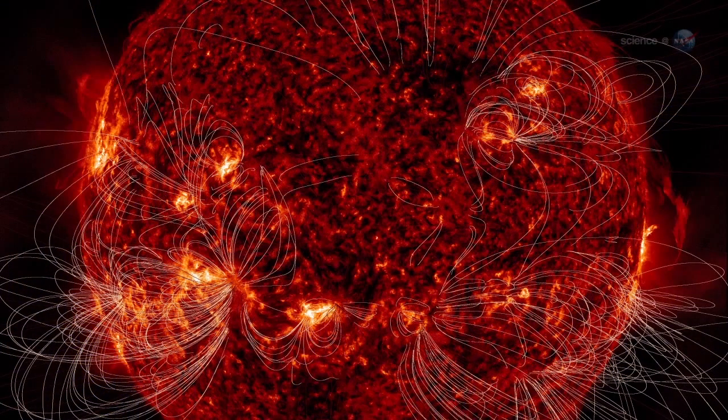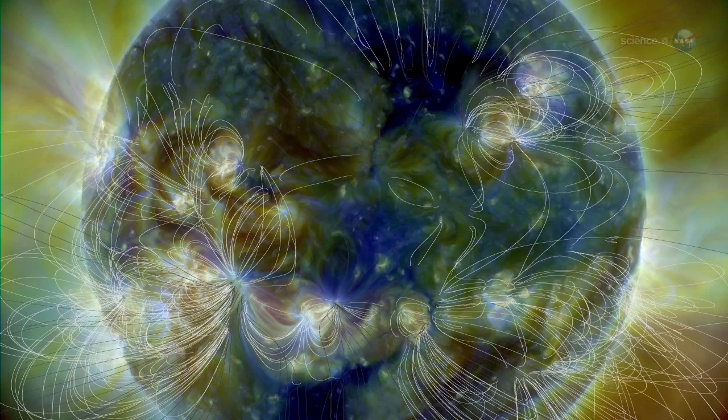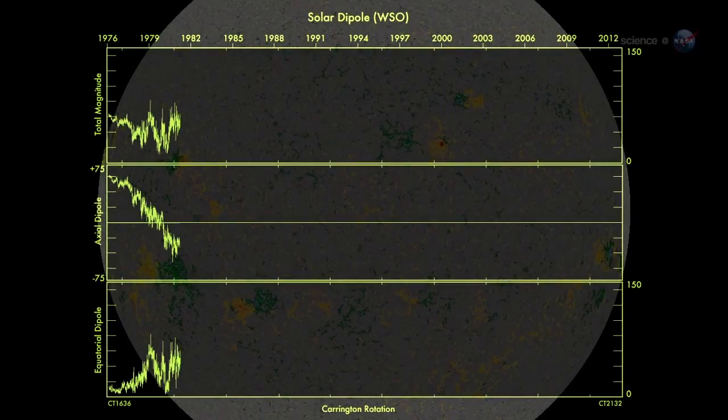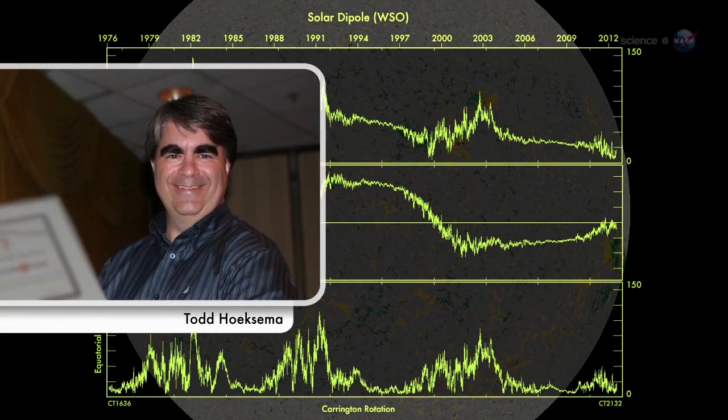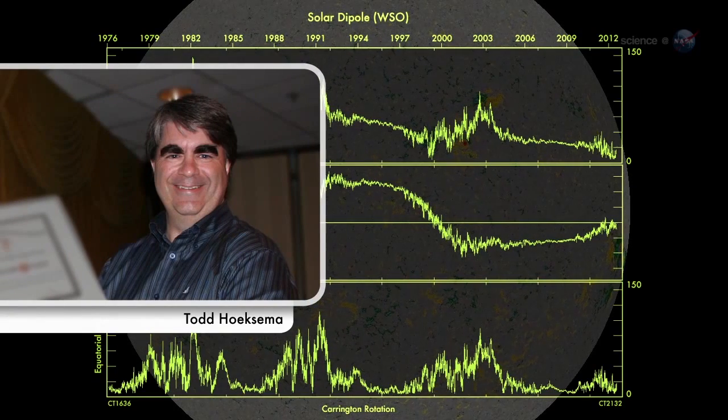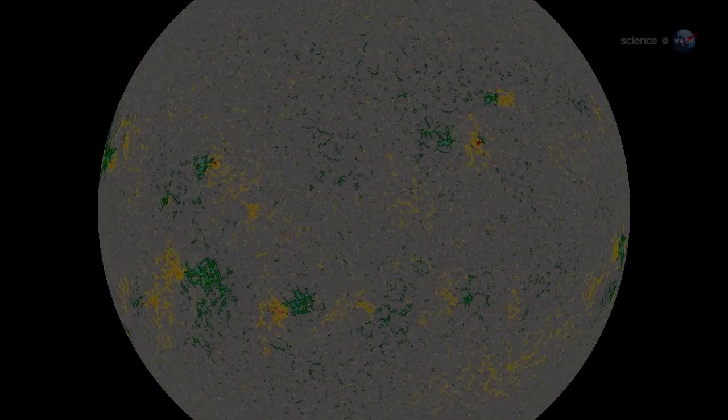According to measurements from NASA-supported observatories, the Sun's vast magnetic field is about to flip. It looks like we're no more than three to four months away from a complete field reversal, says solar physicist Todd Huxama of Stanford University. This change will have ripple effects throughout the solar system.